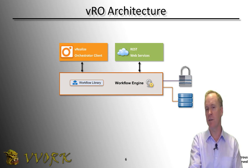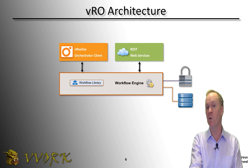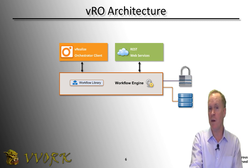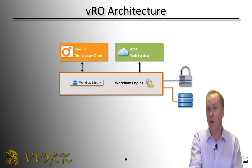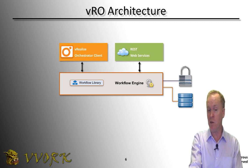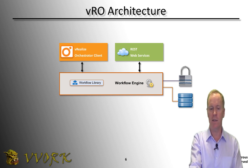The details of how that works are beyond the scope of this particular video, but the basic idea is: if you want to create your own graphical interface for interacting with and running workflows, you can create your own from scratch. Another use of the REST server API is that external systems like vRealize Automation use the Orchestrator server's REST API. So there are a number of different things you can do with the REST API.